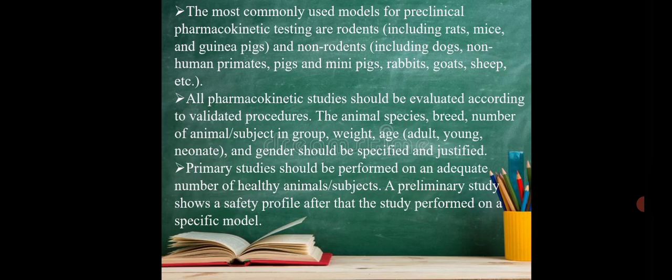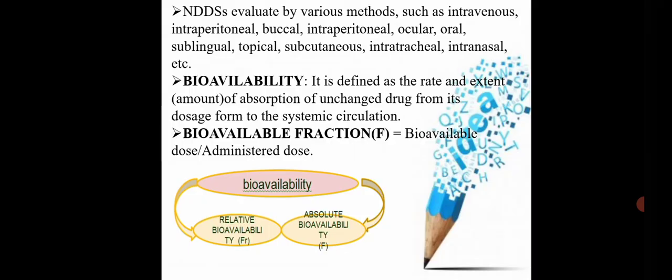All the pharmacokinetic studies should be evaluated according to validated procedure. Like we should know for the in vivo studies initially, what are the weight, age group, different age groups, breeds, number of animals. In number of animals, it is young, adult or neonate. We need to specify and we need to test on every test group. Primary studies and preliminary studies both are performed. NDDS can be evaluated by intravenous, intraperitoneal, buccal, oral, sublingual, intratracheal and intranasal activities. In that, we are going to evaluate in vitro and in vivo. The basic differences here comes.